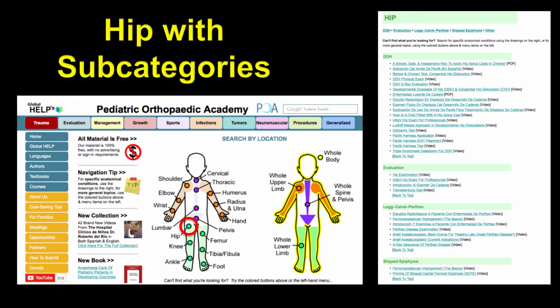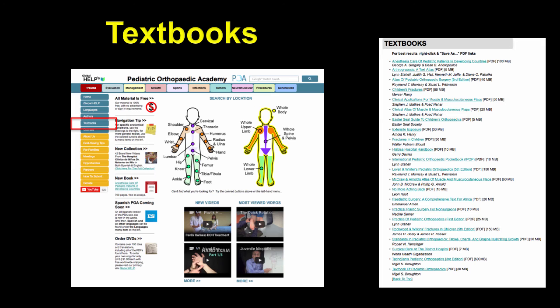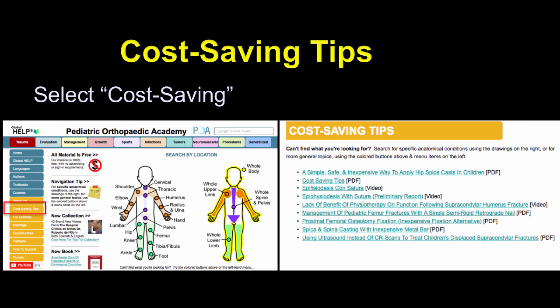For example, for the hip, if you click on hip, you find all the information in PDF and videos on hip problems. If you go to authors, find all authors listed in alphabetical order. Publications can be accessed by clicking their link to the original site. We have textbooks that are available for free—not always the last edition, but recent editions—very valuable for reference. And cost-saving tips, particularly useful in the developing world where these are affordable and usable worldwide.